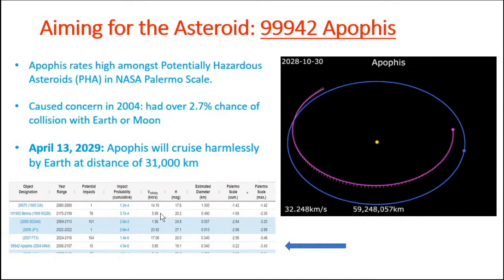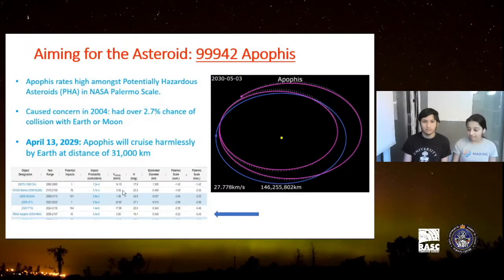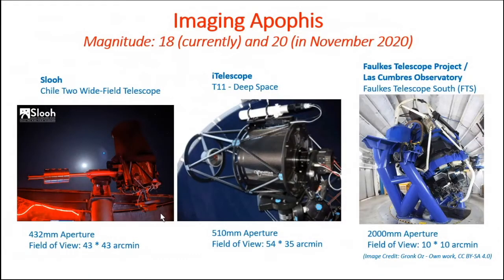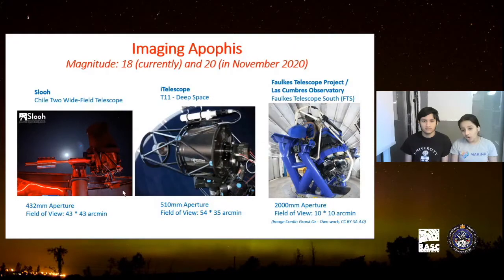I wanted to take the first step to getting data about this asteroid, which was to actually look at it. Unfortunately, I could not use my own telescope at home because its aperture is around 15 centimeters. That was not enough to capture enough light to see dim objects, because this Apophis asteroid is quite dim — around magnitude 18. When I started this project in November, it was magnitude 20. So I needed to use a robotic telescope, which means from my home I can control a telescope very far away.